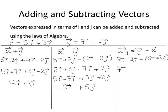So 7i minus 2j. Now removing the brackets, it's minus 5i, minus by a plus is minus 3j.